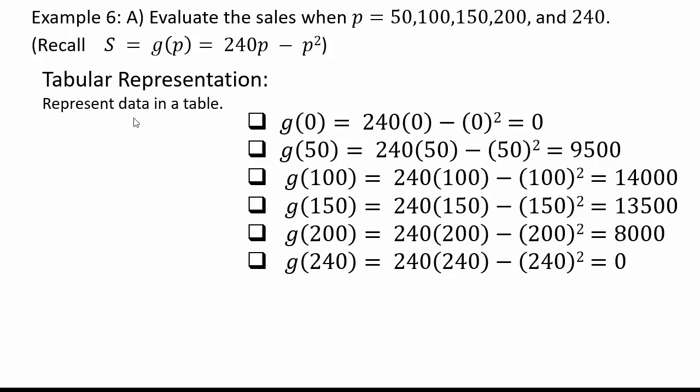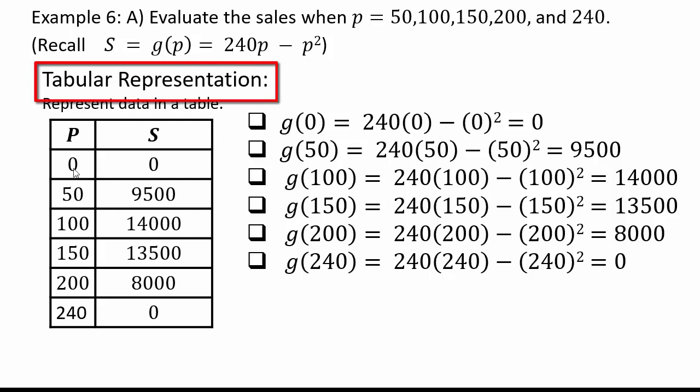Another way we can represent a function is in tabular form. So tabular form you have P column and S column. When price is 0, S is 0. Price is 50, S is 9500, and so on.